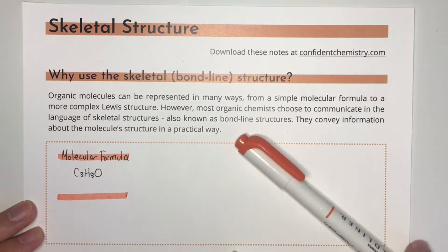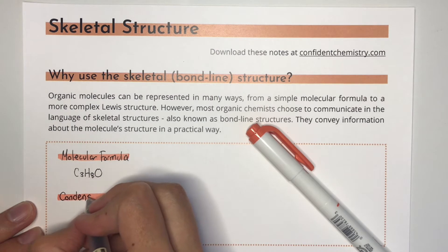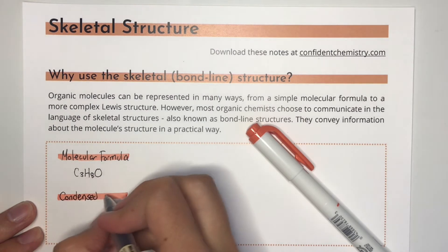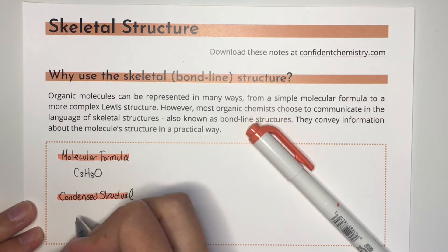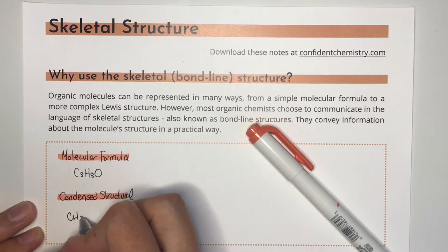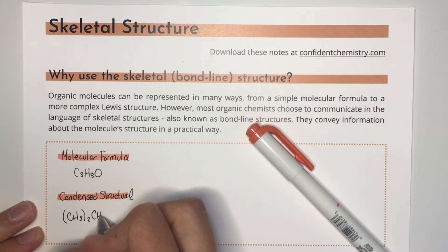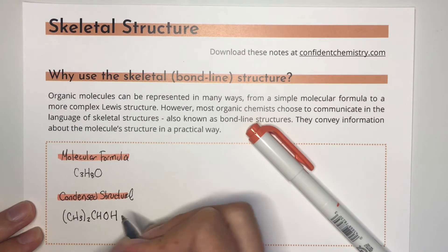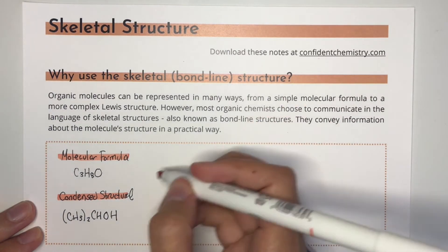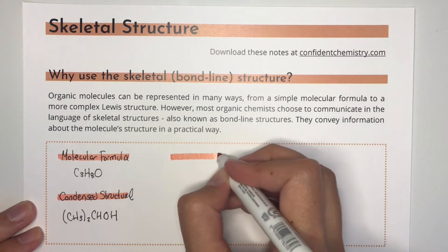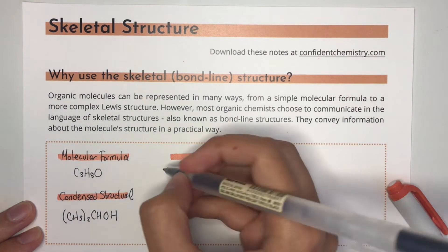The condensed structural formula is also pretty simple to write out and it contains some structural information. We can understand that the CH3 groups in parentheses are attached to the central carbon and that there's also an OH group there. However, once molecules start getting large with more branching, rings, and functional groups, these kinds of formulas aren't great for immediately knowing what a molecule looks like.